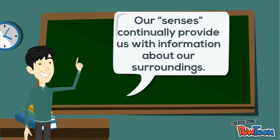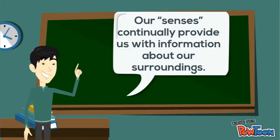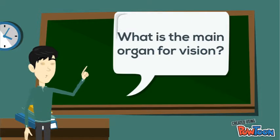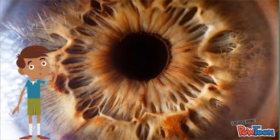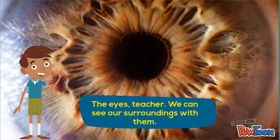Our senses continually provide us with information about our surroundings. What is the main organ for vision? The eyes teacher, we can see our surroundings with them.